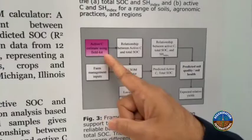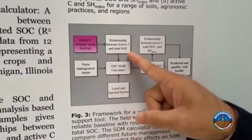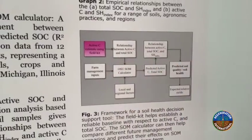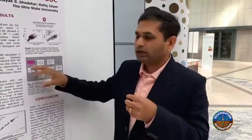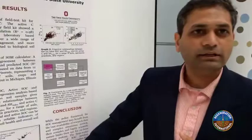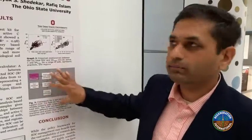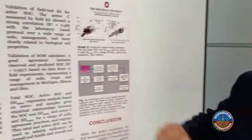This block diagram shows the integration of these two tools: the active carbon test kit in the field combined with the organic matter calculator. Over the last 10 years we developed two individual tools for farmers, but you can't give separate tools to farmers — you need to integrate them. We are integrating these two tools into one system so farmers can use it for better decision-making. If they have a good idea of their active carbon, the reliability of the calculator's prediction will improve.